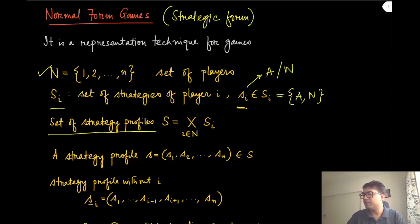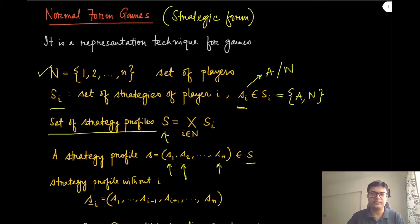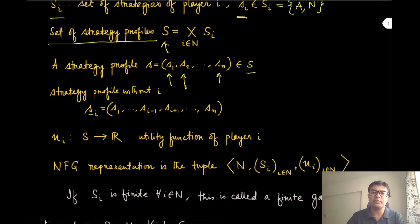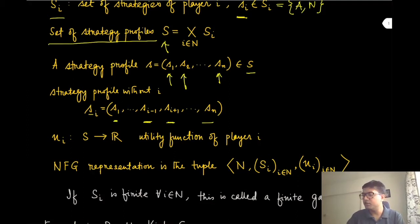A strategy profile is a member of this Cartesian product, meaning when each player has picked a certain strategy — player 1 picks s_1, player 2 picks s_2, and so on up to player n picking s_n — the vector of all these strategies is called a strategy profile and lives in the set capital S. In game theory we also use the special notation S_{-i}, which enumerates the same strategy profile excluding agent i — all strategies from s_1 to s_{i-1} and then s_{i+1} to the rest.